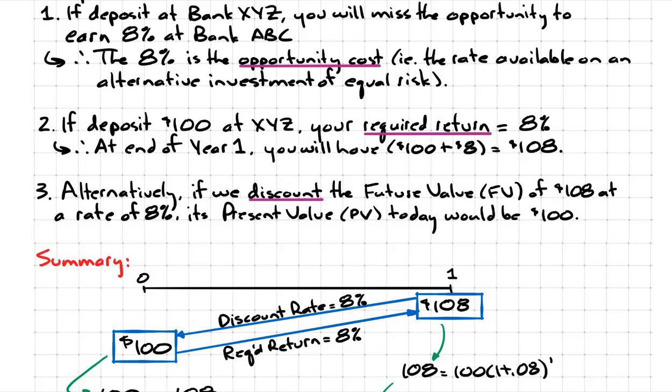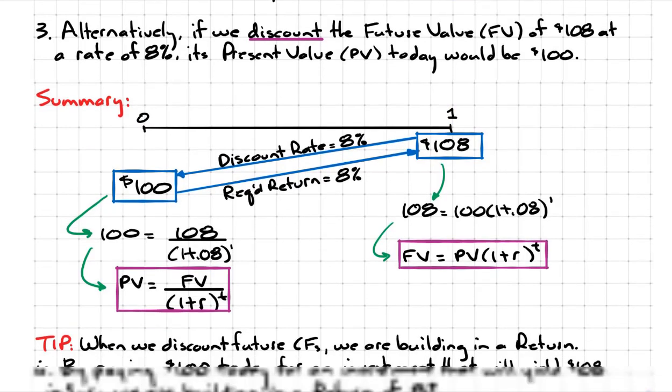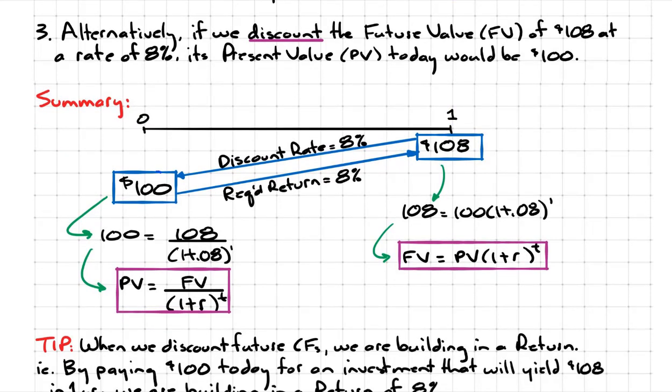Let's have a look at a visual framework of what's going on. Here's the beginning of the year, here's the end of the year. As we said before, imagine you walk into either of these banks and you deposit $100 today. We would require 8%, so at the end of the year we would have $108.